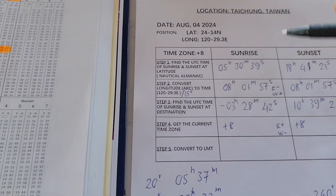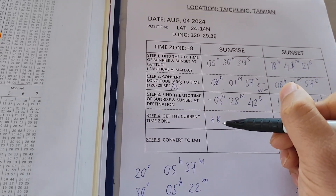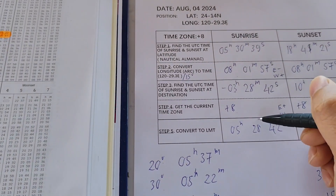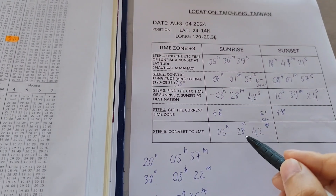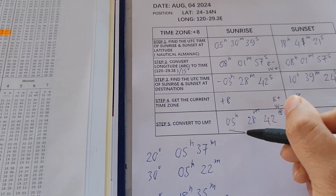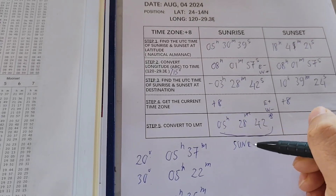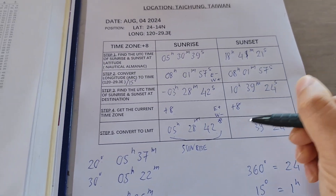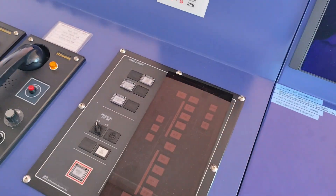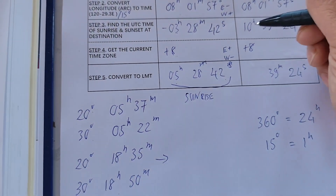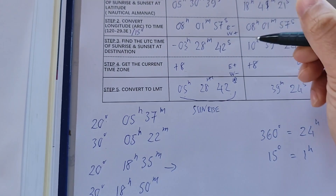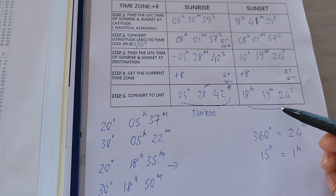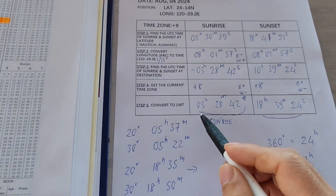For sunrise local time: 03h 28min 42sec plus 08h (time zone) equals 05h 28min 42sec — this is the actual local sunrise time. For sunset: 10h 39min 24sec plus 08h equals 18h 39min 24sec. So the actual local sunrise time is 05h 28min 42sec and the actual local sunset time is approximately 18h 39min.